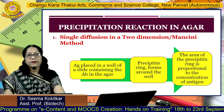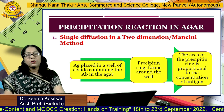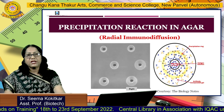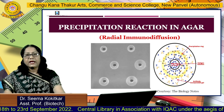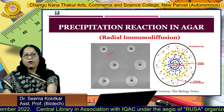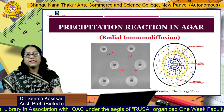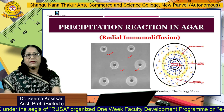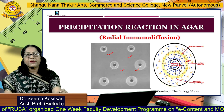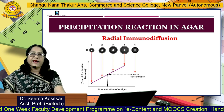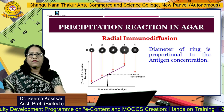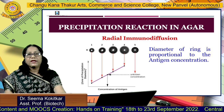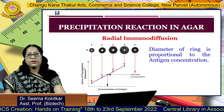How are we going to perform it? We take a plate that contains agar with the antibody. We cut a well where we place our antigen. As the antigen diffuses around, we will be able to see the formation of a precipitation ring. You can see the different diameters of our rings, and these diameters indicate different concentrations of the antigen. The antigen is loaded in the center and diffuses outward so that you can see this precipitation line. The diameter of the ring is proportional to the antigen concentration. We can plot a standard graph using known concentrations of antigens and extrapolate the diameter of an unknown antigen to determine its concentration.